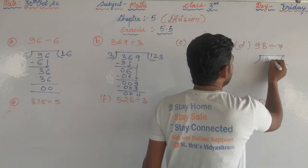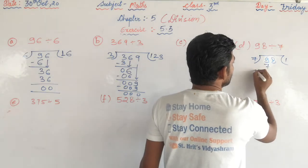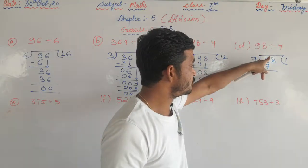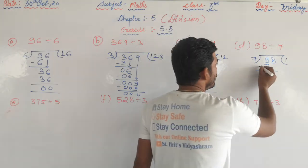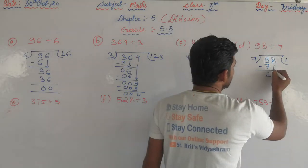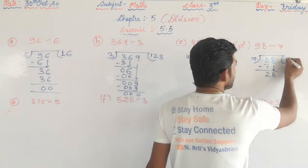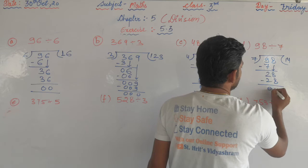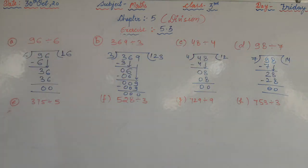Now 98 divided by 7. Seven ones are 7, seven twos are 14 — 14 is greater than 9, so take the smaller: 7 times 1 is 7. Subtract: remainder 2. Bring down the next digit to get 28. Seven fours are 28, remainder 0. The quotient is 14.